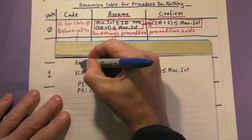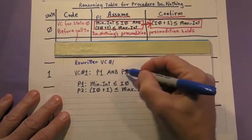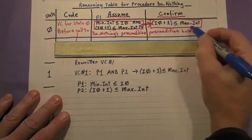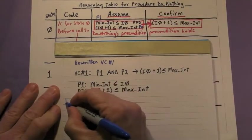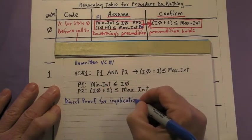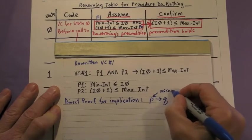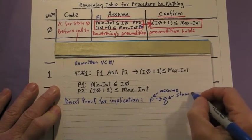Let's move on to proving VC number 1. I've rewritten it here using the labels P1 and P2 for the two premises. For the logical implication used in VC number 1, we're going to use a direct proof technique. With a direct proof, you assume the premise and then show that the conclusion must be true.